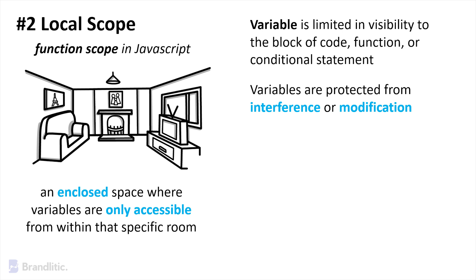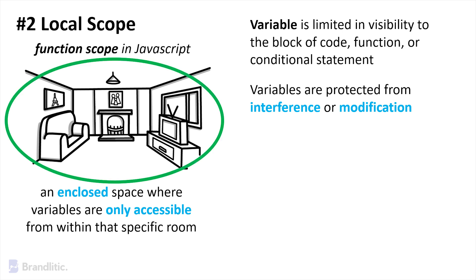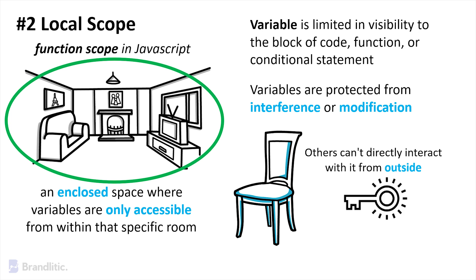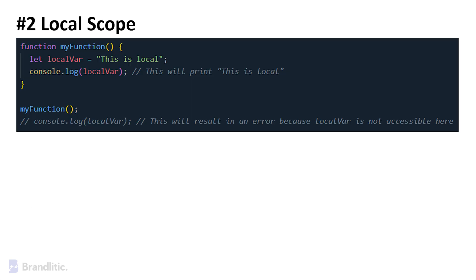Consider this analogy: if a Local Scope is like a private room, a variable declared within that scope is similar to an object or a piece of furniture placed inside that room. Others can't directly interact with it from outside — they would need permission, like a key to enter the room, to then access the variable. Here's an example for the same.